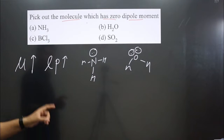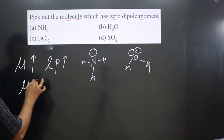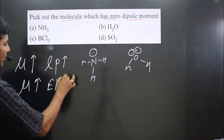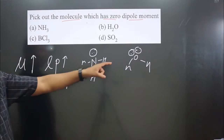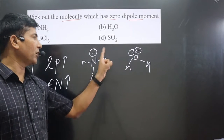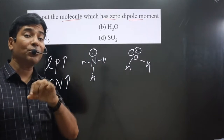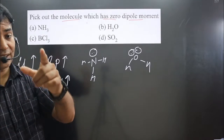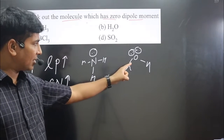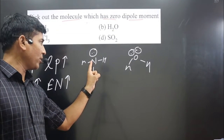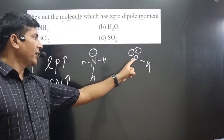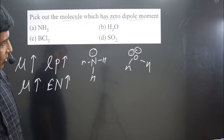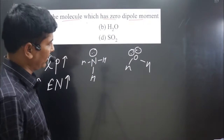Another point: dipole moment is directly proportional to electronegativity — higher the electronegativity, higher the dipole moment. Oxygen has more electronegativity than nitrogen, so using the electronegativity concept also, we can say H₂O has more dipole moment than the ammonia molecule.